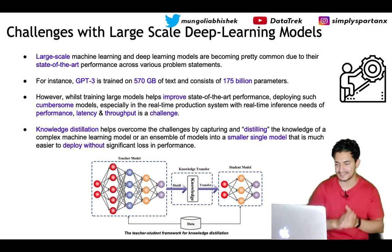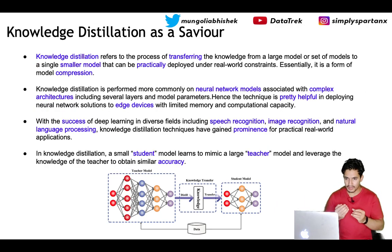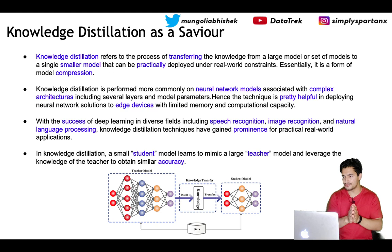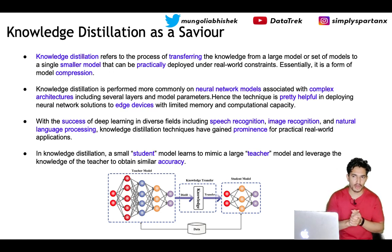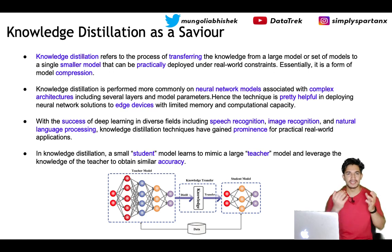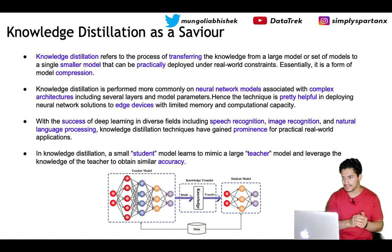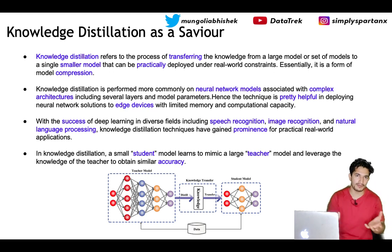Knowledge distillation helps overcome this challenge by capturing the knowledge of a complex machine learning model into a smaller single model that is easier to deploy without significant loss in performance but with reduction in size. Knowledge distillation is the process of transferring the knowledge from a large model to a smaller model which can be practically deployed in real-world scenarios — essentially it's a type of model compression.